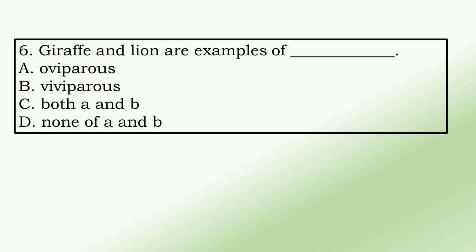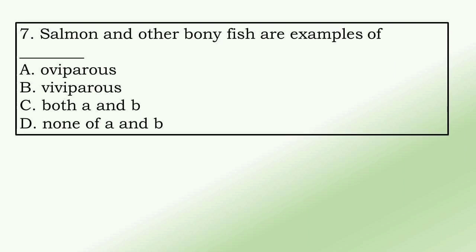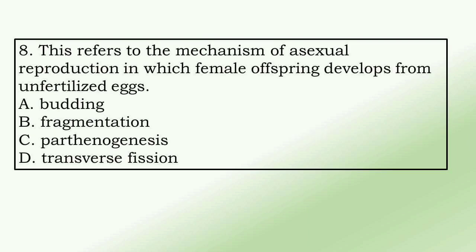6. Giraffe and lion are examples of a. oviparous, b. viviparous, c. both a and b, d. none of a and b. 7. Salmon and other bony fish are examples of a. oviparous, b. viviparous, c. both a and b, d. none of a and b.